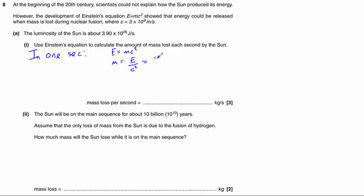That energy here is 3.90 times 10 to the power of 26 divided by, which we have to be careful with brackets here, 3 times 10 to the 8 joules squared. It gives us an answer of 4.3 times 10 to the power of 9 kilograms, which means that the mass lost per second is 4.3 times 10 to the power of 9 kilograms per second.